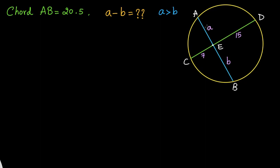Hello everyone. In this video we have a nice geometry problem. We are given a circle where we have two intersecting chords. The length of chord AB is 20.5. We are supposed to find A minus B, the difference between the two parts of chord AB, that is AE and EB.